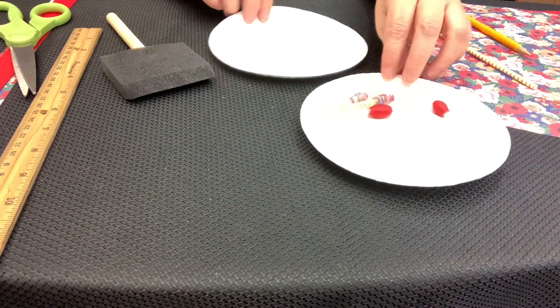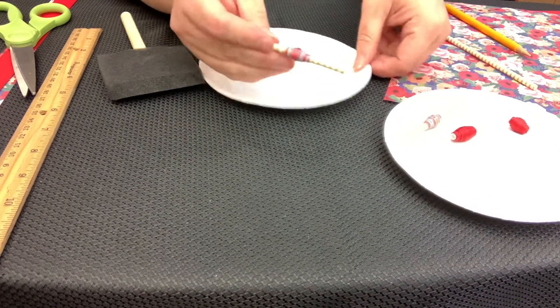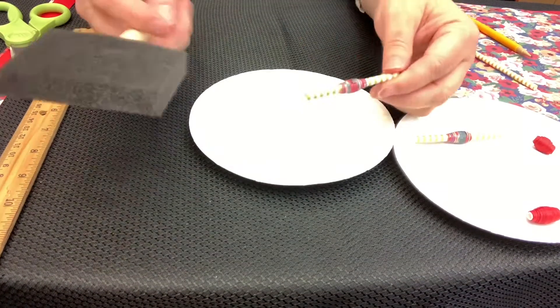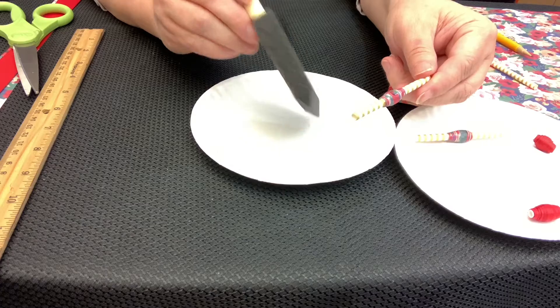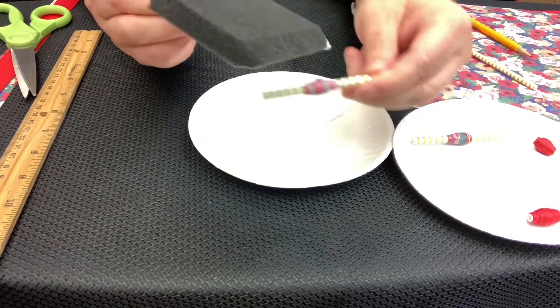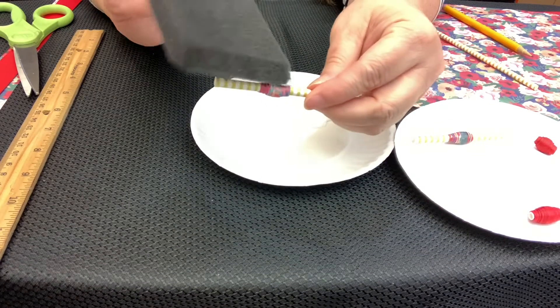Then you will take your bead on the straw and your sponge brush, and you sponge on the sealer glue finish onto your paper bead.